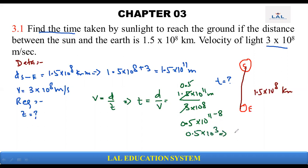If we convert this, we get 500 seconds. Converting to minutes, we get 8 minutes and 20 seconds. The time for light from the sun to reach earth is 8 minutes and 20 seconds.